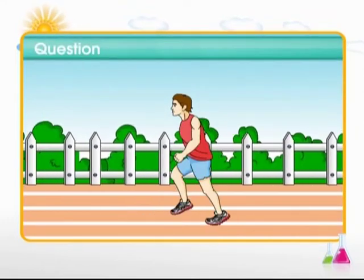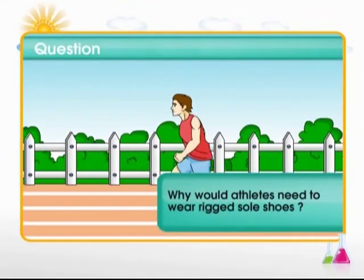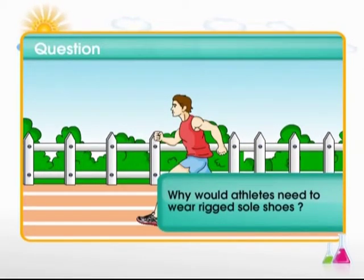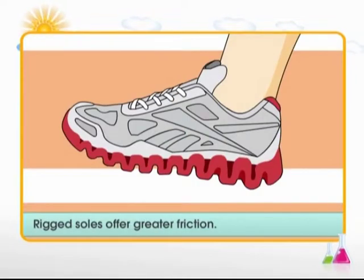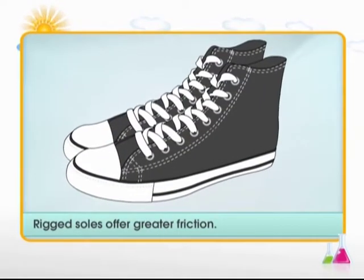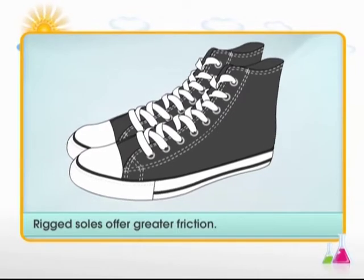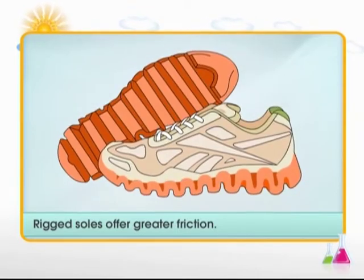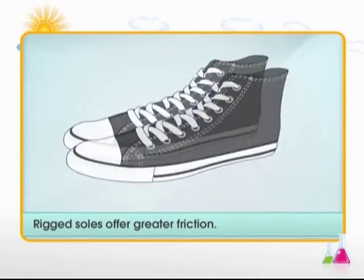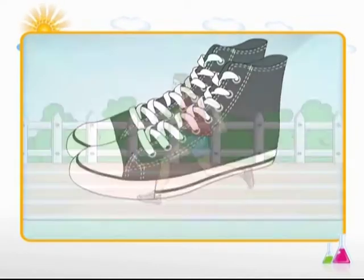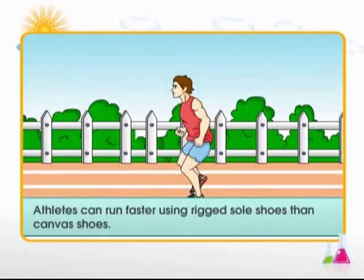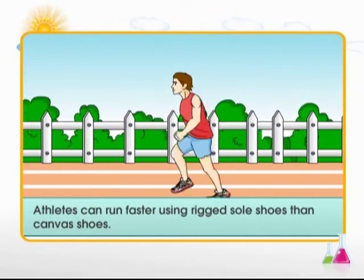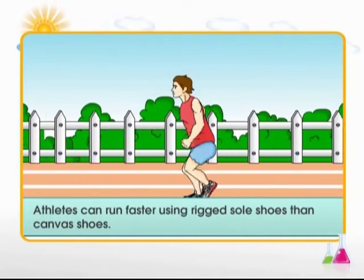It's time to answer the question raised at the beginning of this module. Athletes prefer rigged shoes over the canvas shoes. This is because they would require rigged soles, which being rougher than canvas soles, will offer greater friction. Greater friction offered by rigged shoes will assist athletes to run at high speeds.